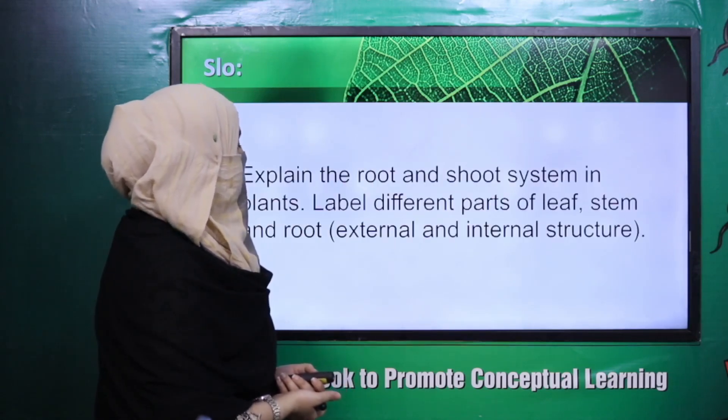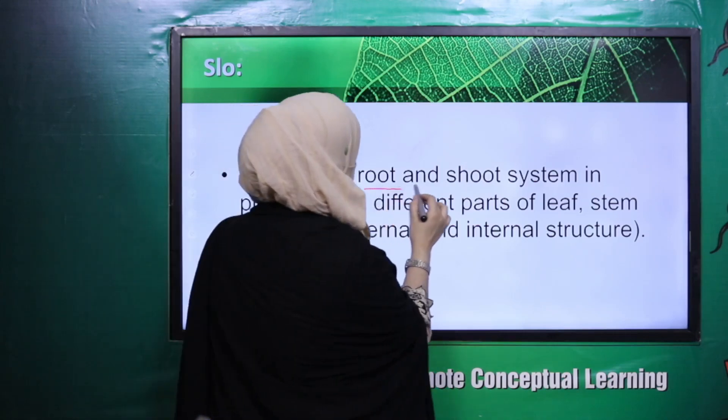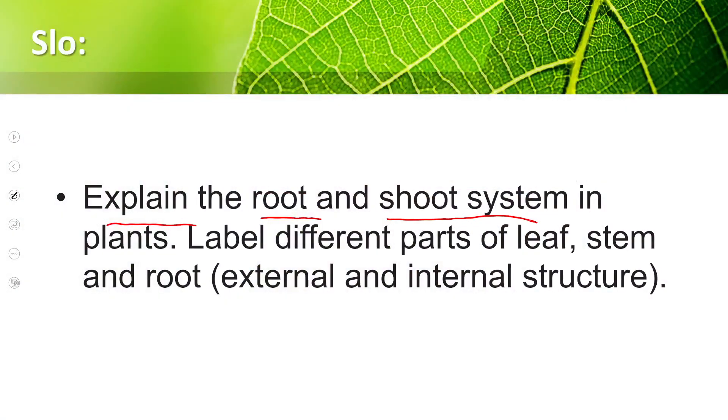Let's quickly see what is our SLO. Explain the root and shoot system in plants. Label different parts of leaf, stem and root, external and internal structure. The SLO is divided into two parts. First one is root and shoot system. This we will learn in the next lecture.